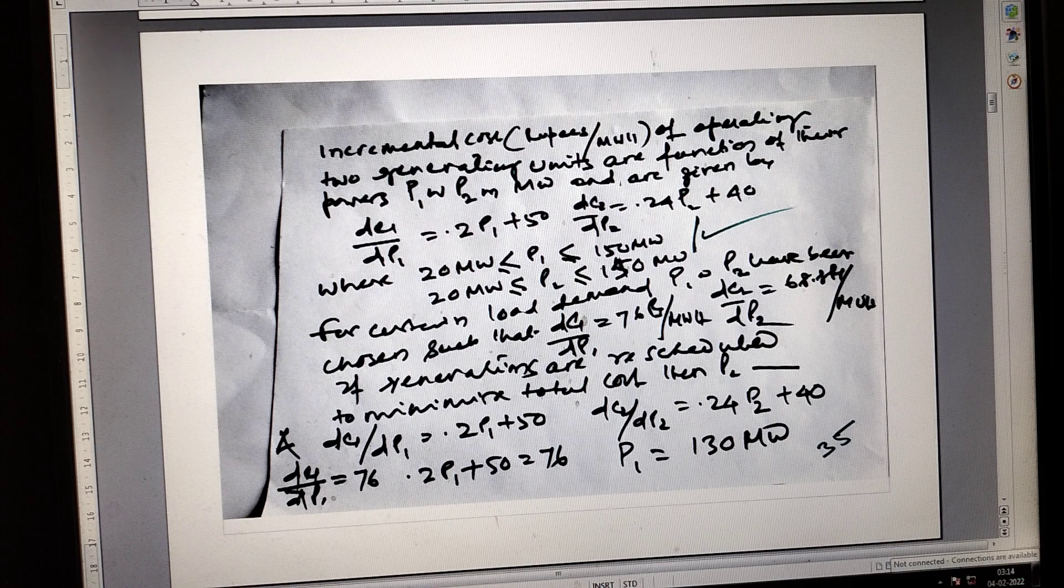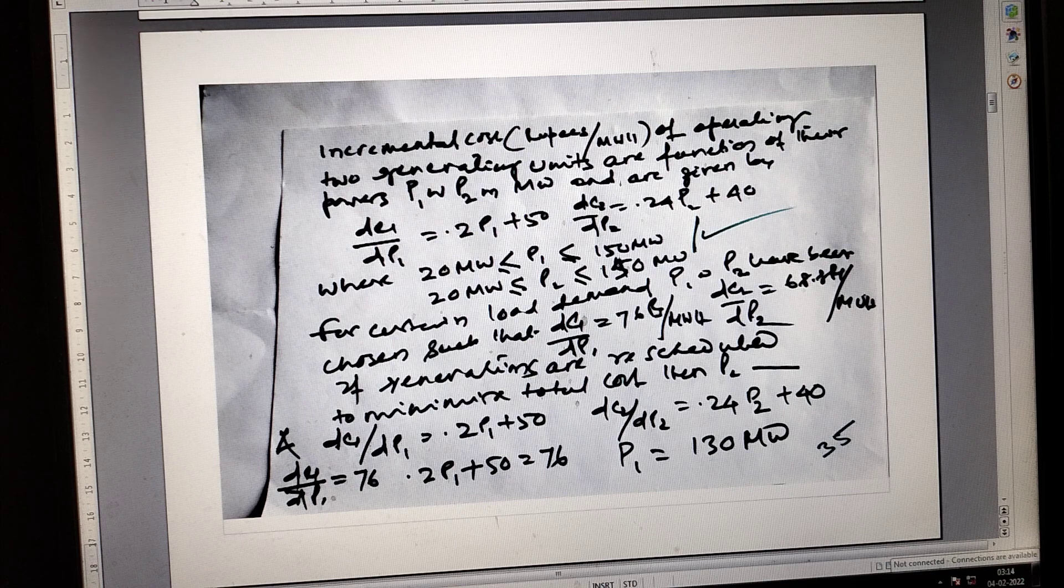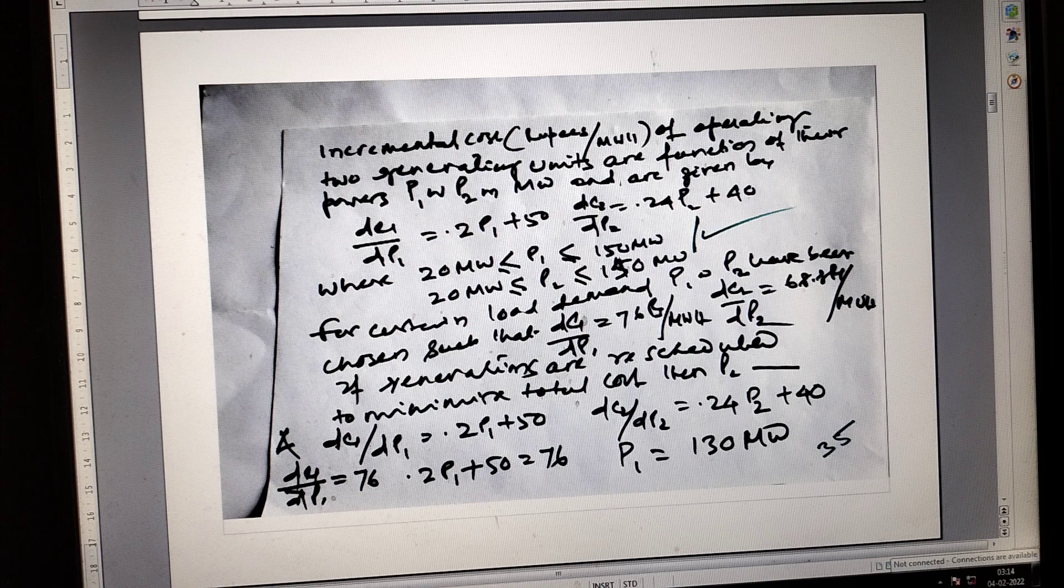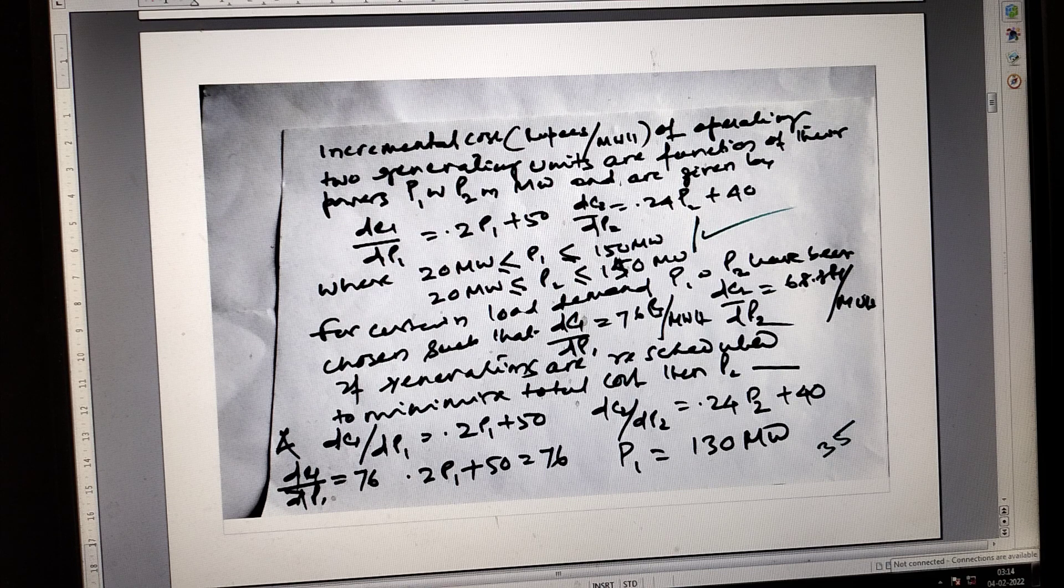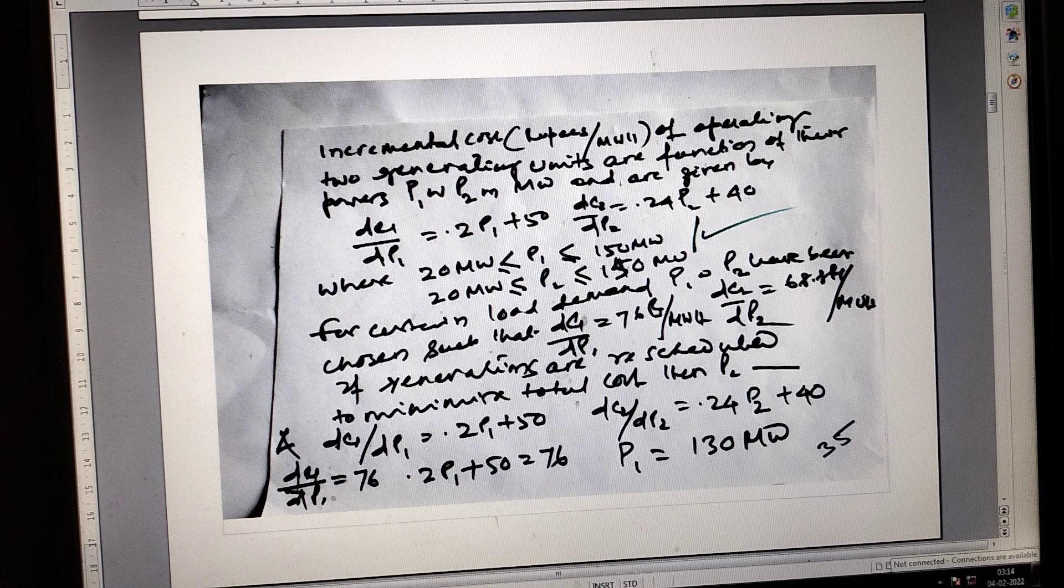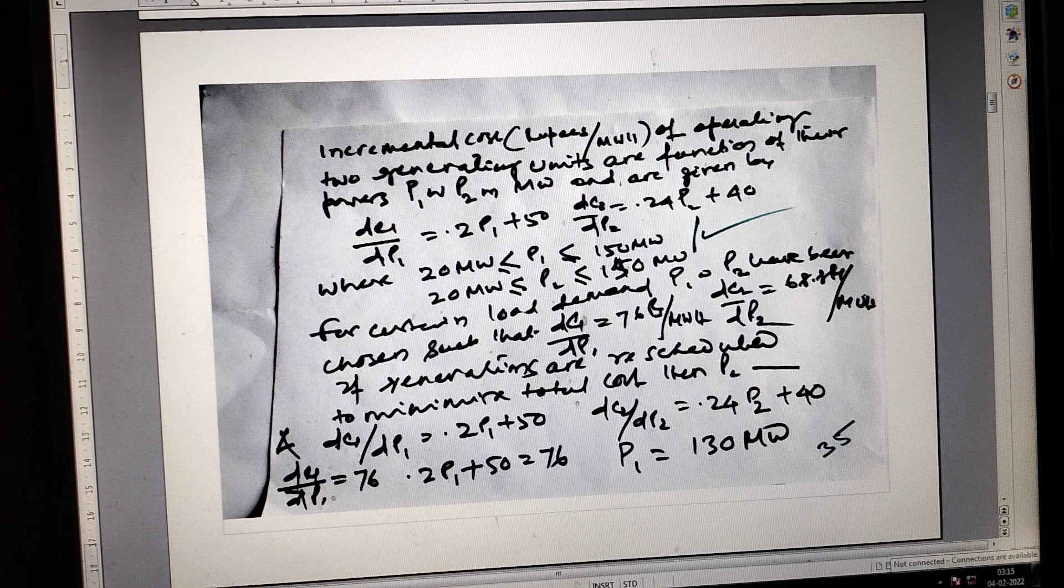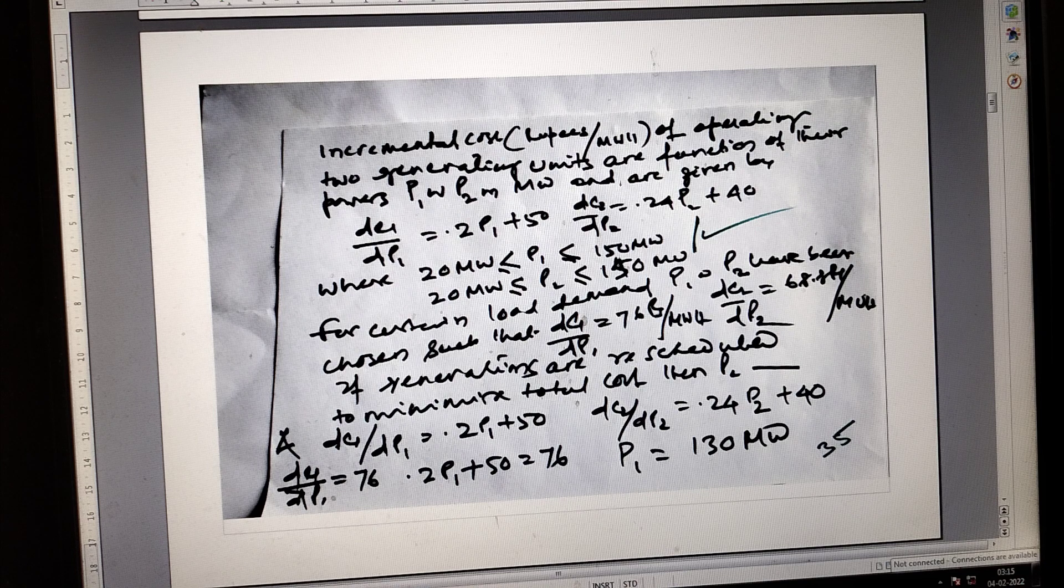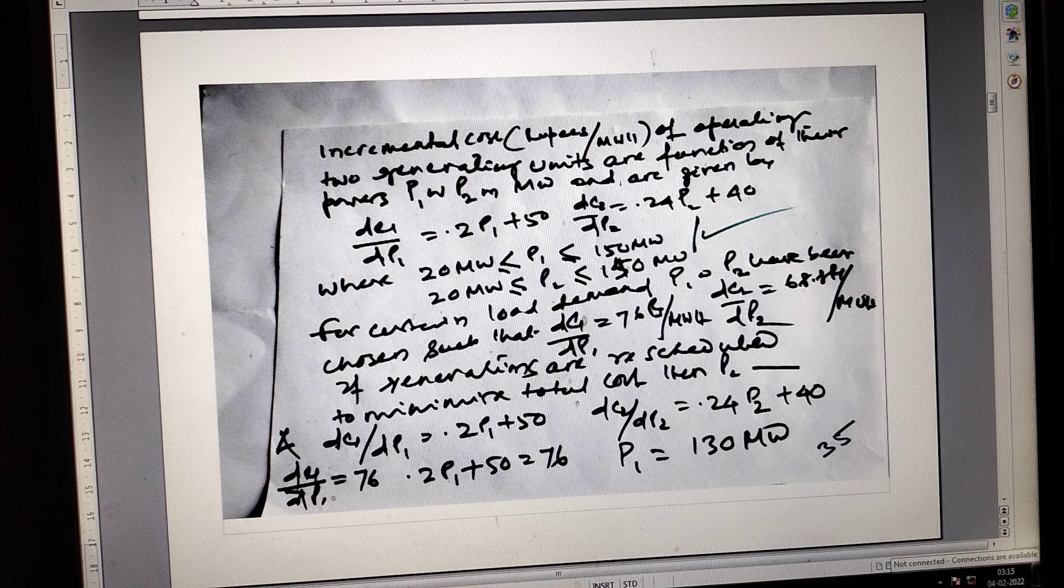DC1 by DP1 is equal to DC2 by DP2. From here we can get P1 equals 113.64 and P2 equals 126.36. When DC1 by DP and DC2 by DP are given, you can calculate P1 and P2 for constant load demand to maintain total cost minimized.